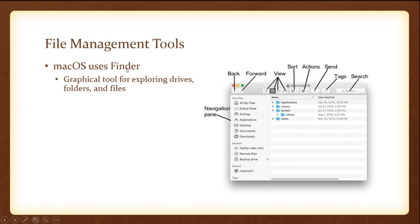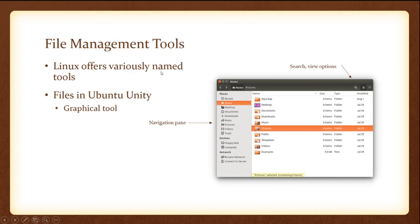For a Mac computer, they use something called Finder — similar to Windows Explorer and File Explorer but for Mac. It has a navigation pane on the side, a back button and forward button, options to change the view and sort by criteria, plus actions, tags, and search. For Linux, they offer different file management tools as well — this is Files in Ubuntu Unity. You get your navigation pane, files pane, and search and view options. Very similar looking, but a little bit different.